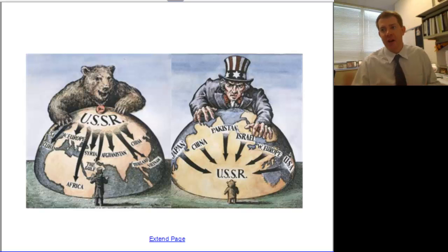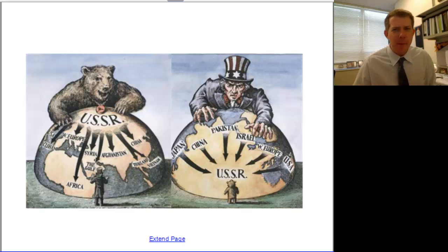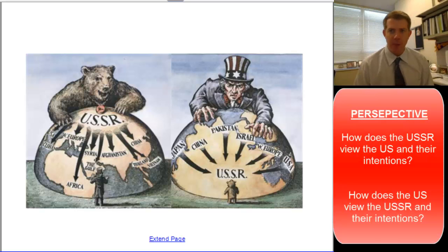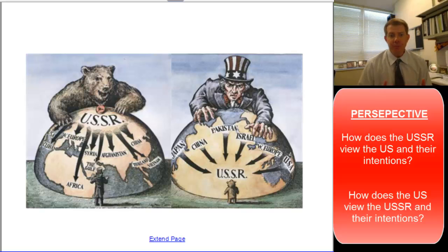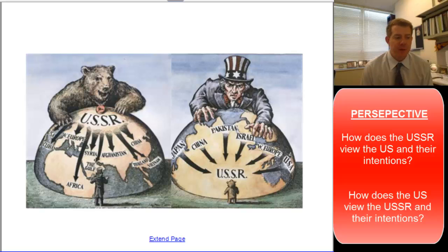The bear represents the Soviet Union, and obviously Uncle Sam represents the United States. It's all about perspective. The Cold War is all about perspective, and that's one of the things I want us to use the Kennan reading to do tonight. The perspective from the Soviet Union is that the United States is an aggressor, looking to limit and destroy the Soviet Union's way of life by focusing on an anti-communist stance.